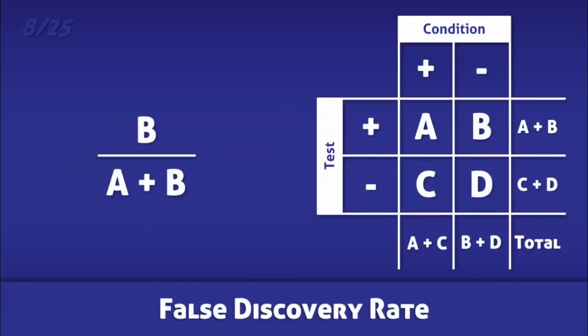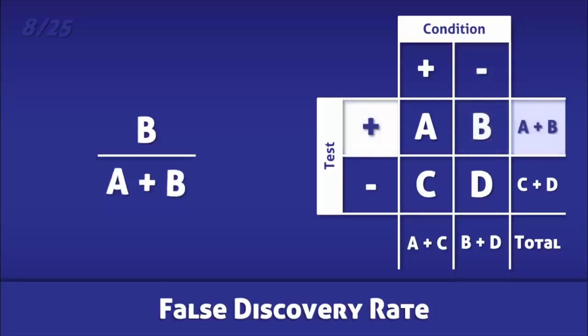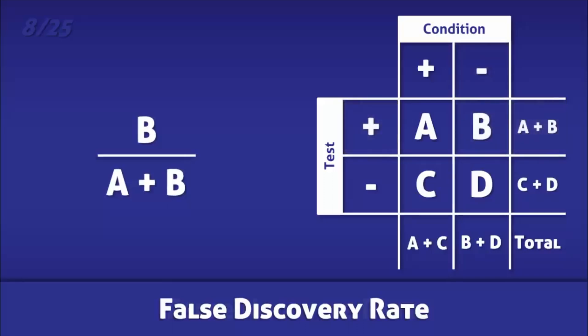The false discovery rate is the proportion of positive test results that incorrectly identify a condition. It is calculated by dividing the number of false positives by the total number of positive tests.